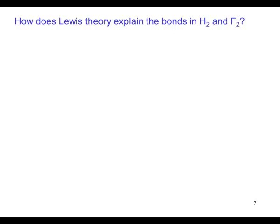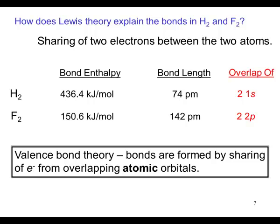How does Lewis theory explain bonds in hydrogen and fluorine? The sharing of two electrons between the two atoms is a result of an overlap.